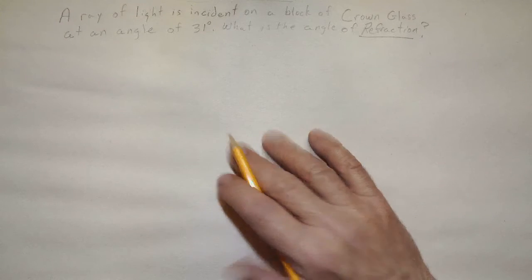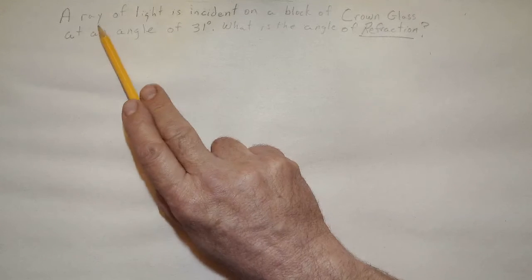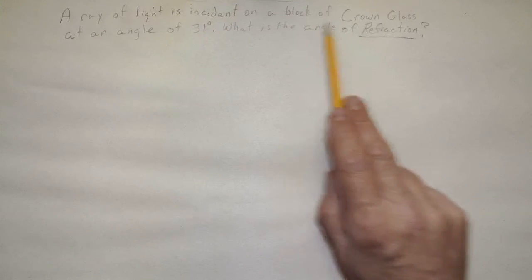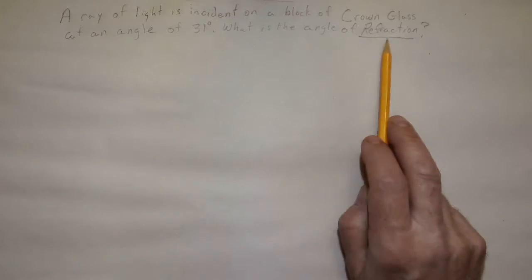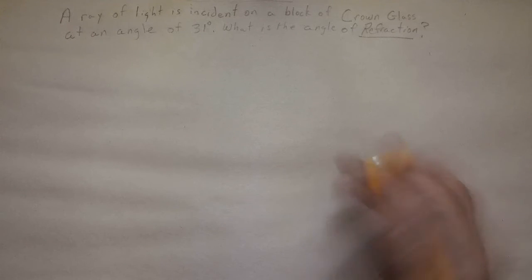Let's do a Snell's law problem. In this problem we say a ray of light is incident on a block of crown glass at an angle of 31 degrees, and what is the angle of refraction? Pretty straight up standard Snell's law problem.